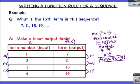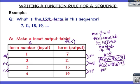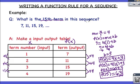Now, 15 represents the term number, or x. So I can substitute 15 in for x to find my output, or term. f of 15 equals 4 times 15 plus 3, which is 60 plus 3. Therefore, the 15th term is 63. If I were to continue this pattern, the 15th term in the sequence would be 63.